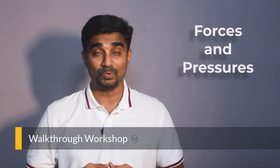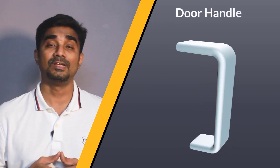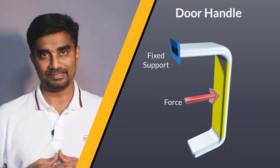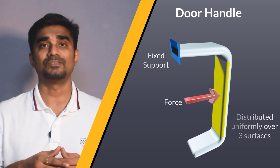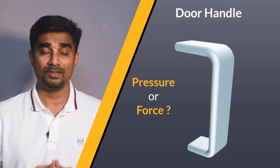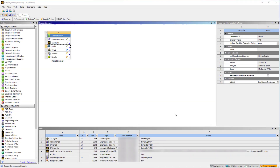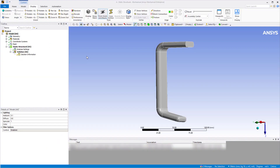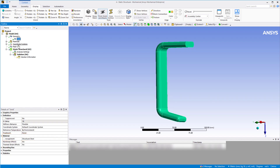Let us now see an example to understand the two types of loads. We will model a door handle on which a force of 40N is applied in the horizontal direction. This force is assumed to be distributed uniformly over three surfaces of the handle. Should we use a pressure boundary condition or a force boundary condition? Are the two cases equivalent? We are now in ANSYS Workbench with a static structural system A. Double click on the model cell to open ANSYS Mechanical. The geometry has been imported, structural steel has been assigned as the material, and a mesh has also been generated.